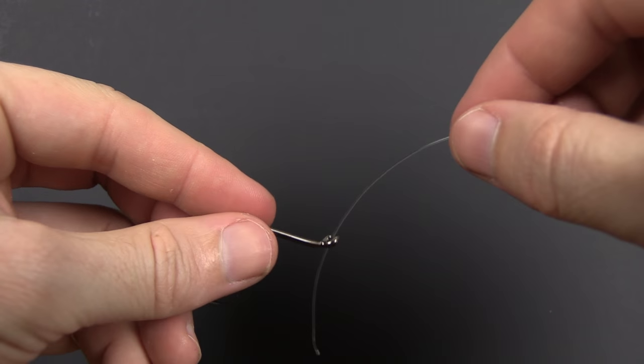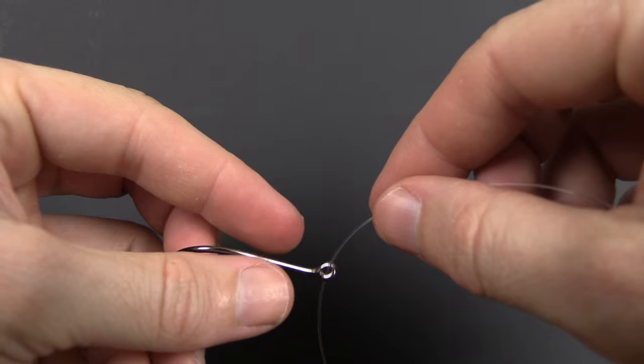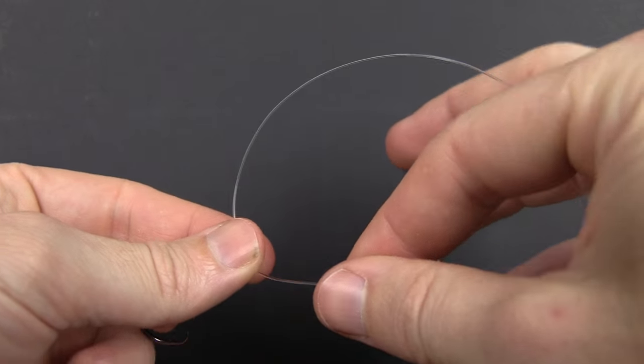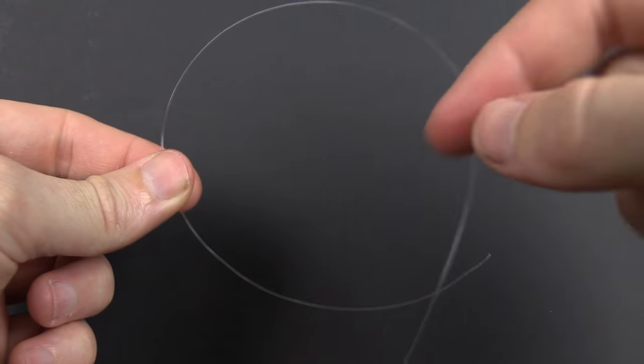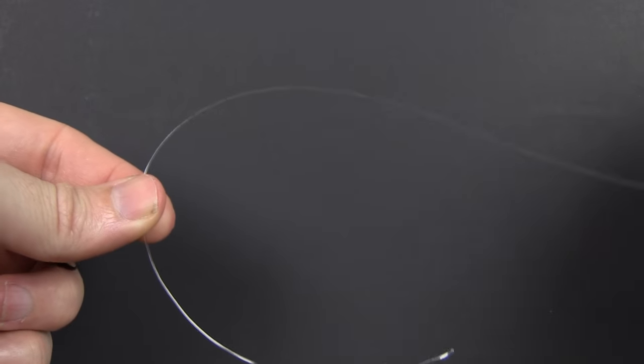The first step is just to go through the hook. You can obviously use this going to a hook or a lure—in this case it's just a hook. I have the tag end pointing down; this top area is the main line.